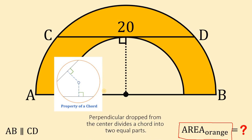Take note: a perpendicular drop from the center divides a chord into two equal parts. Therefore, from this point of tangency, segment CD divides into two equal parts. We can split this 20 into 10 and 10.